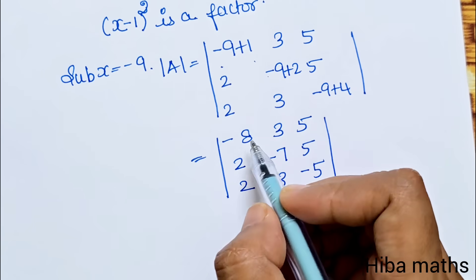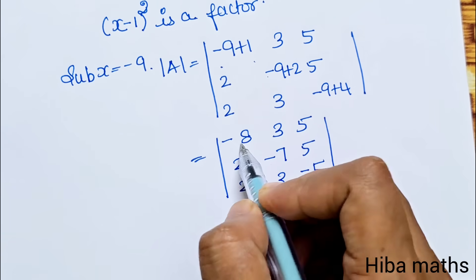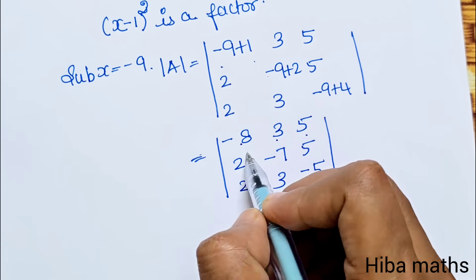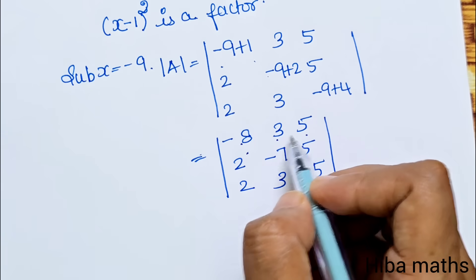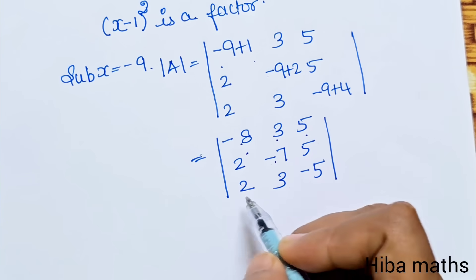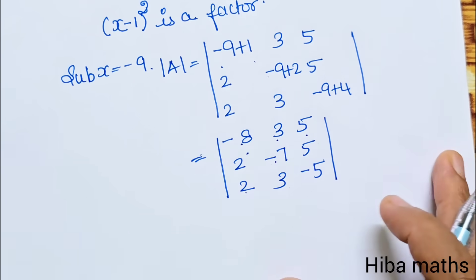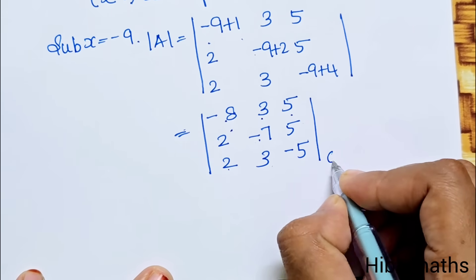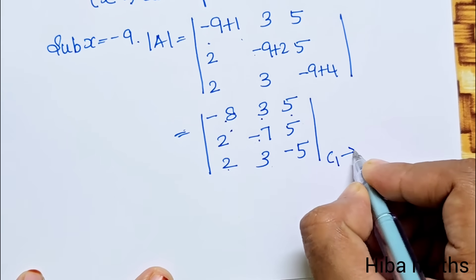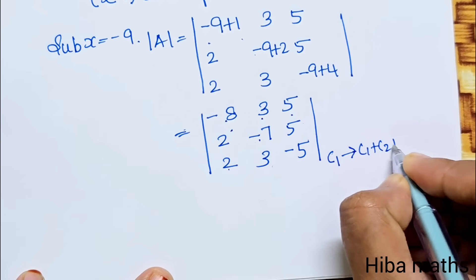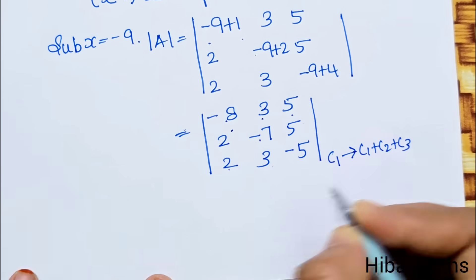Apply the column operation C1 → C1 + C2 + C3. For the first column: -8+3+5=0, -7+2+5=0, -5+2+3=0. So all entries in column 1 become 0.